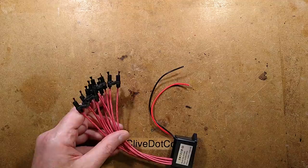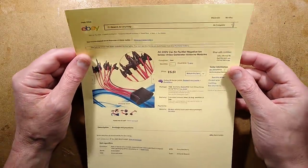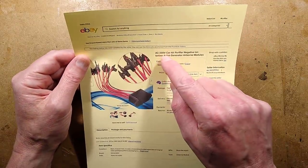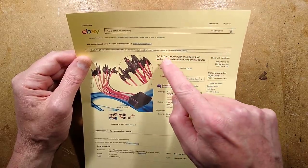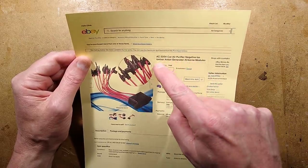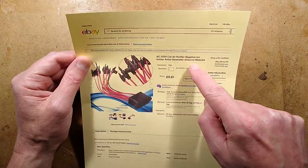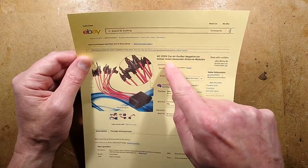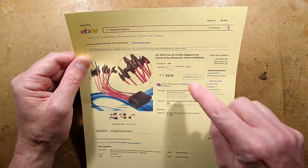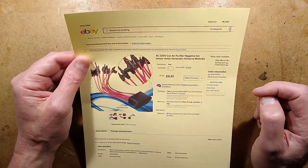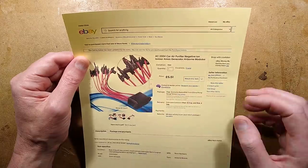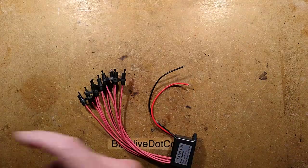This one came from eBay, there's a surprise. It's described as AC 220 volt car air purifier—220 volts in your car, very handy—air purifier, negative ion ionizer, anion generator airborne modules. They often use anion. It was £5.51, that was all inclusive. That's extremely good value for a module like this. It's kind of specialized.